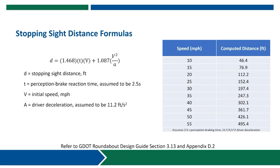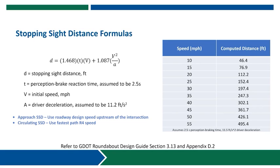The GDOT roundabout design guide Appendix D2 as well as NCHRP Report 672 provide a formula for calculating stopping sight distances. In this equation, V is the speed of the vehicle — on the approach to an intersection that would be the design speed of the roadway. Around the circulatory roadway that would be the speed of the vehicle as it navigates around the central island, and for the crosswalk considerations that would be the speed of the vehicle as it's making a right turn along the fastest path.